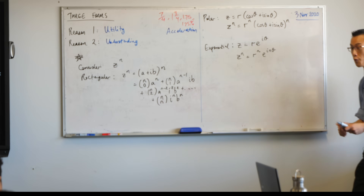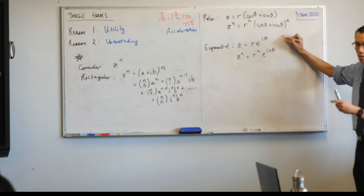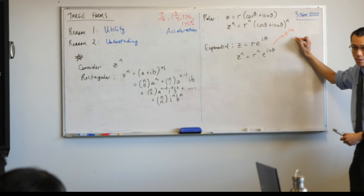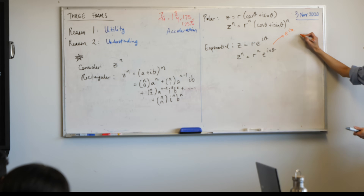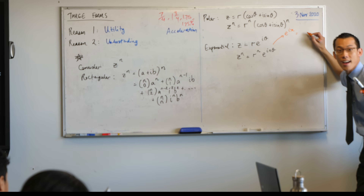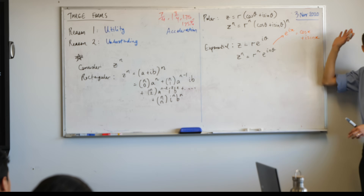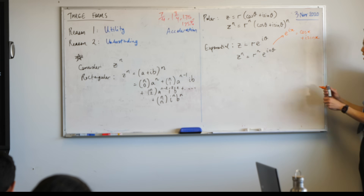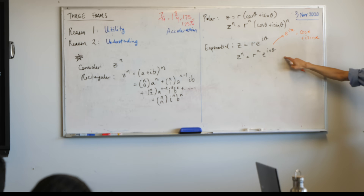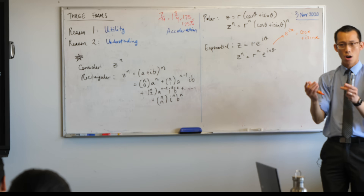Now go back to Friday's lesson — we proved a big formula that tells me what this thing means. It was named after a famous mathematician, Euler, a Swiss mathematician. He proved something to do with e to the i·x. What was that equal to? It should look really familiar — cos x plus i·sine x. We did that informal proof on Friday; go look at the Canvas page for the full formal proof.